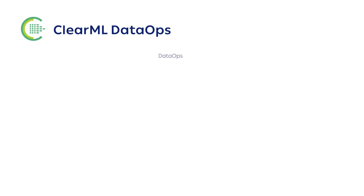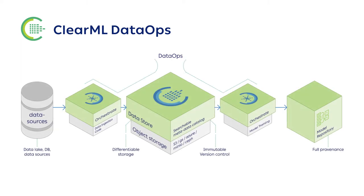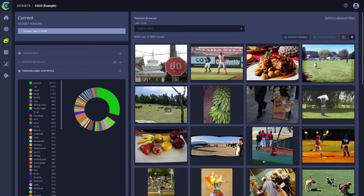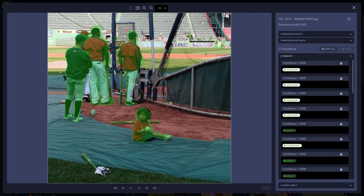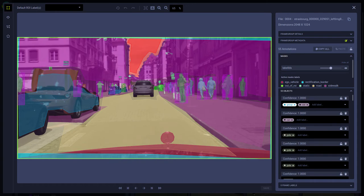Last but not least, we've got Dataset Management. ClearML Data is the missing piece tying together data and models in model repositories. Version your data and connect to your experiment. Orchestrate propagation of data amongst experiments and machines. Turn unstructured data into queryable datasets, and more.